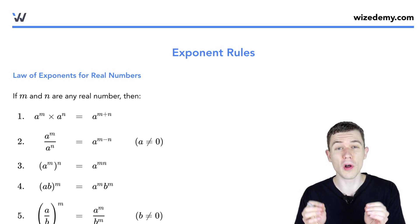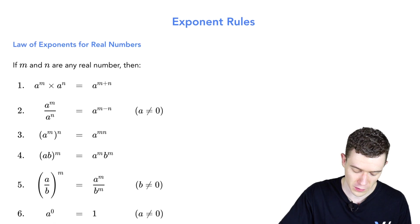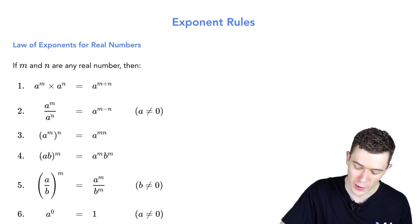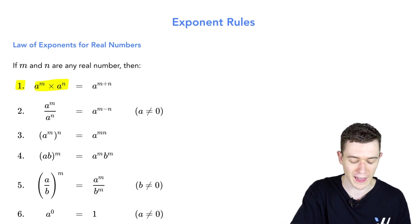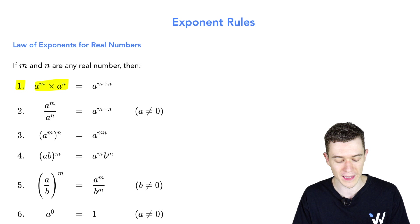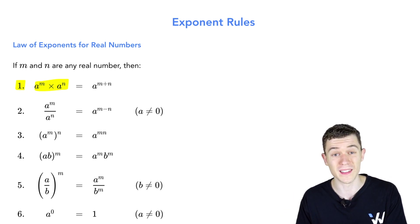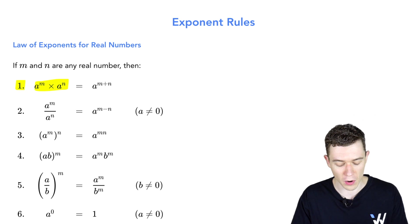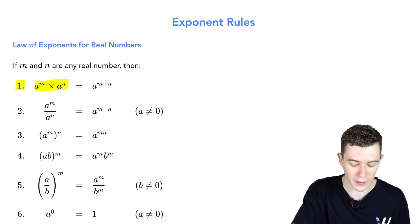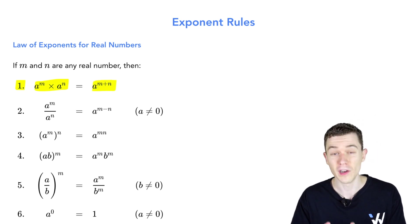Let's look at all the main laws for exponents we'll be using in this section. First, if we multiply like bases — a to the m times a to the n — this means we add exponents. Here a is the base, m and n are real numbers, and this equals a to the m plus n.